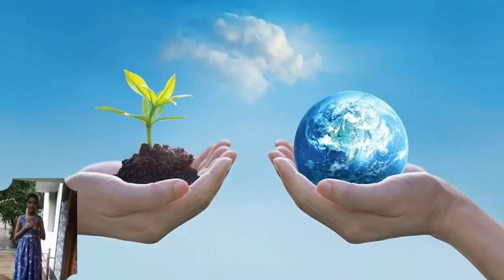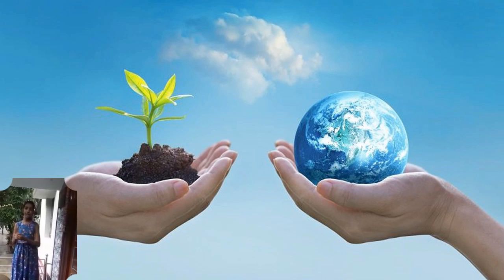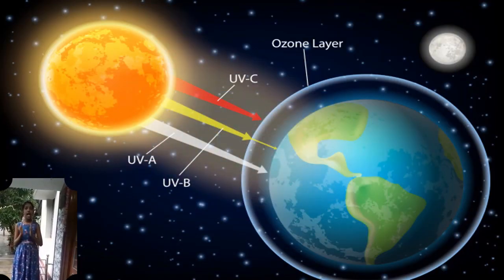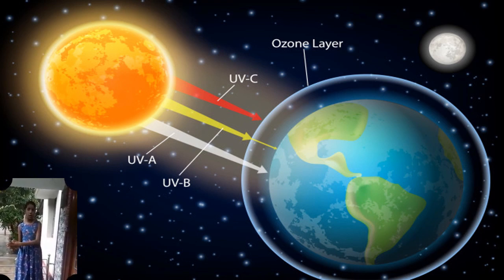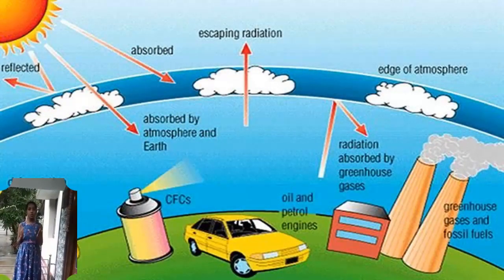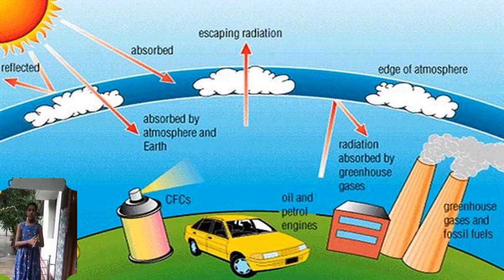Good morning. My name is Srippi Acharya from seventh grade. Today I'm going to show you some measures to protect the ozone layer. The ozone layer is a layer that covers the earth and protects us from the harmful ultraviolet rays of the sun. Pollution made by humans has harmed the ozone layer — there are holes in it which allow harmful rays of the sun to come directly onto the earth.